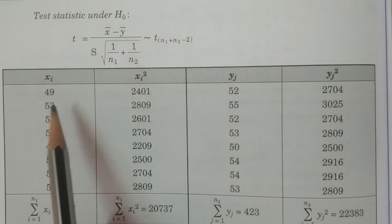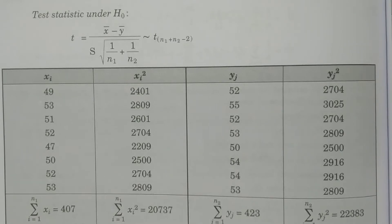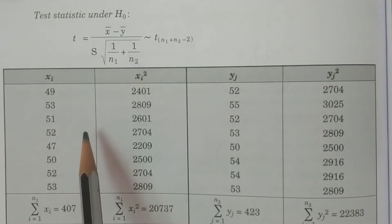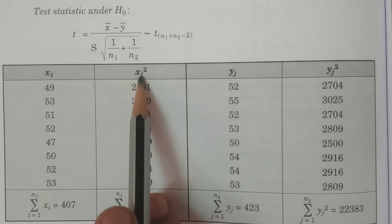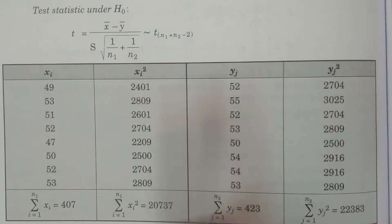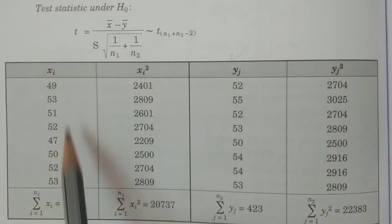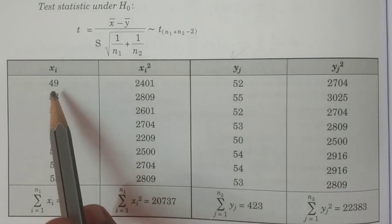We calculate the sample data: X-bar, Y-bar, S1-squared, S2-squared, and D-bar from observations. For the first sample, Xi values are 49, 53, 51, and so on. We compute Xi-squared (49², 53², 51²...) and the summation of Xi and Xi-squared. Similarly, we compute summation of Yj and Yj-squared.